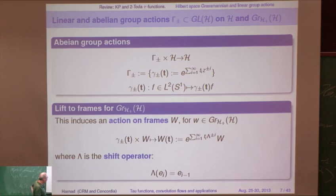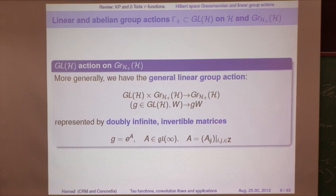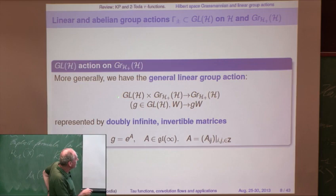These are special elements of a bigger group — something like GL of the Hilbert space H. One has to put in some constraints to make sure that makes sense; one has to be able to take finite determinants and so on. But there's a good definition of a general linear action on the Grassmannian, lifted in the obvious way from an action on the Hilbert space.